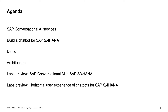About the agenda: we would like to start with SAP Conversational AI Services, the platform itself. Then talk about how to build a chatbot for SAP S4HANA, talk specifically about the demo and take a look at a working model, take a look at the architecture, and then take a look at the SAP Conversational AI plan with SAP S4HANA going forward and the horizontal user experience approach of chatbots in SAP S4HANA.